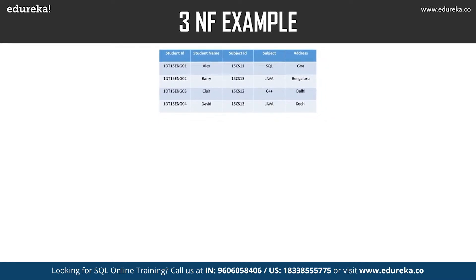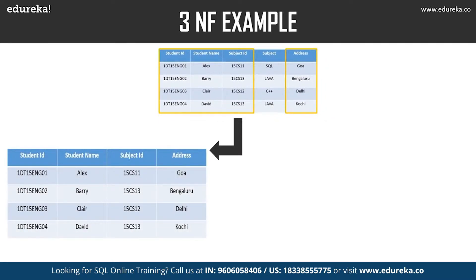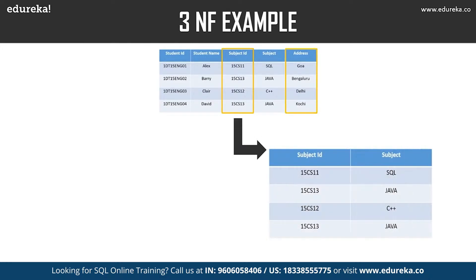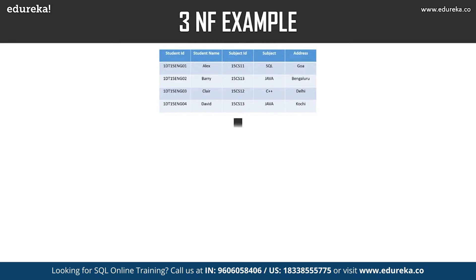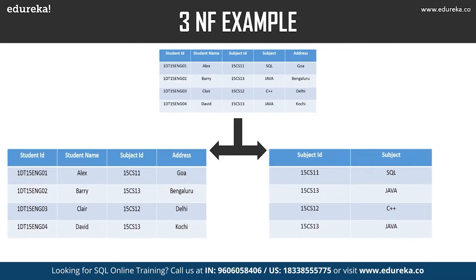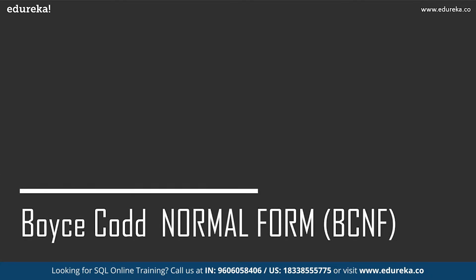To achieve third normal form, we divide the table. The first table stores student ID, student name, subject ID, and address — all columns referring to the primary key, student ID. The second table holds subject ID and subject, so subject is dependent only on subject ID and not on student ID. All non-key attributes are now fully functionally dependent only on the primary key of their respective tables.